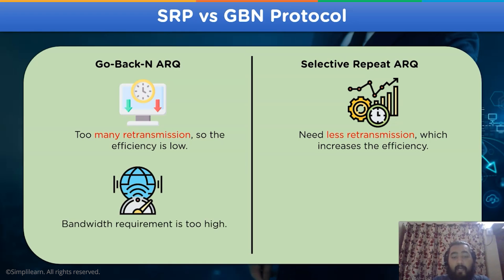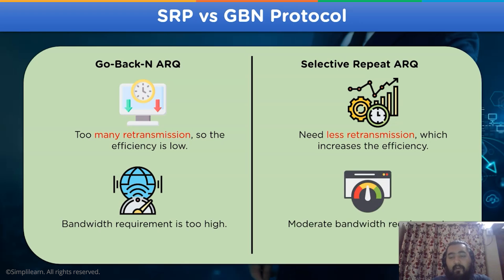The bandwidth required for Go-Back-N ARQ protocol is very high due to the greater number of retransmission frames. For SRP protocol, only a moderate bandwidth requirement is needed.